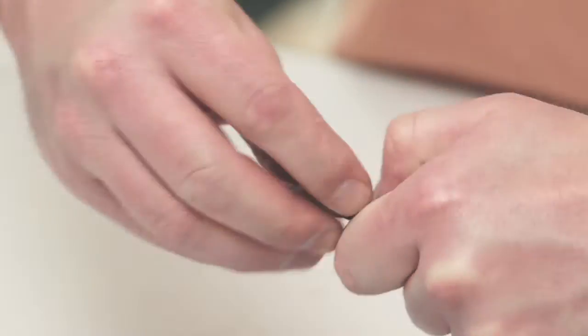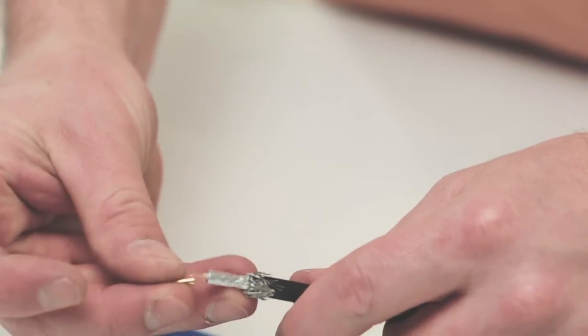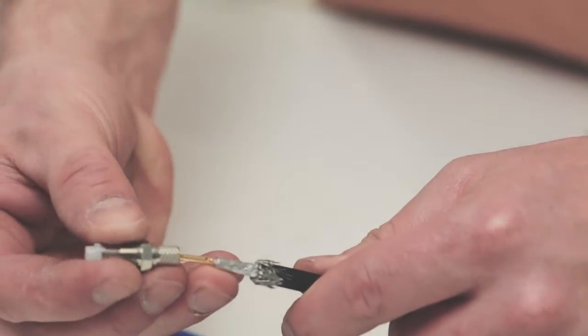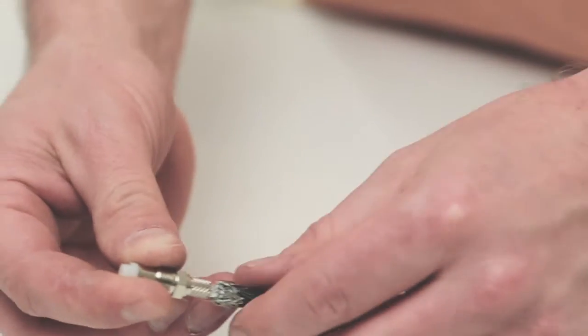Peel back the braid and place it on top of the jacket. Slide on the pin and the connector housing and push up the braid.